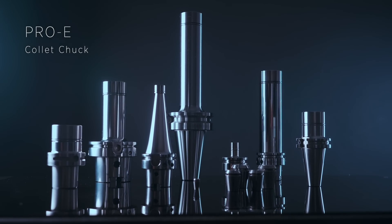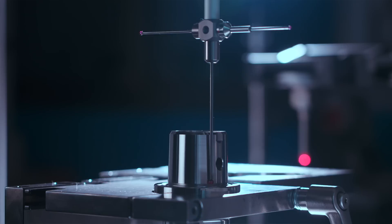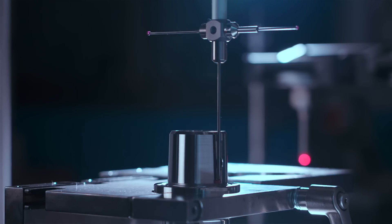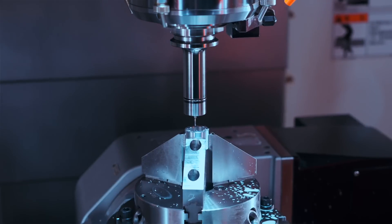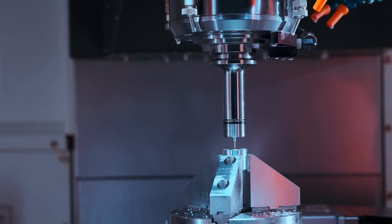Taking ProE Collet chart as an example, we can achieve run-out accuracy within 3 microns, as well as ultra-high clamping pressure, which extend the lifespan of the cutting tool. All these details need to be properly configured to create unmanned factories.